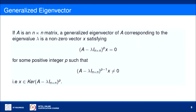Let me define the generalized eigenvector of a square matrix. If A is a square matrix of order N, a generalized eigenvector of A corresponding to eigenvalue λ is a nonzero vector x satisfying (A − λI)^p · x = 0 for some positive integer p, such that (A − λI)^(p−1) · x ≠ 0. In other words, a generalized eigenvector is a member of the null space of (A − λI)^p.